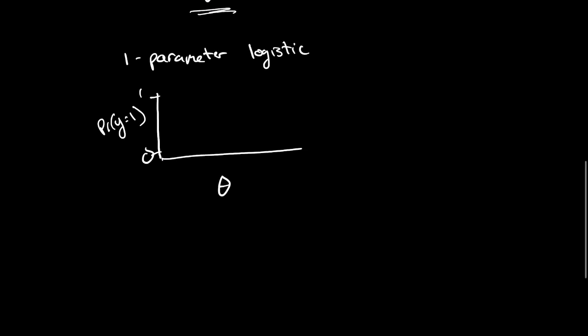Now let's think of a very simple type of item response model called a one parameter logistic. A one parameter logistic graphically looks identical to what I've drawn above, where we have our theta and we have our y axis which is the probability that y is equal to one. There's only one parameter that determines differences between possible items.